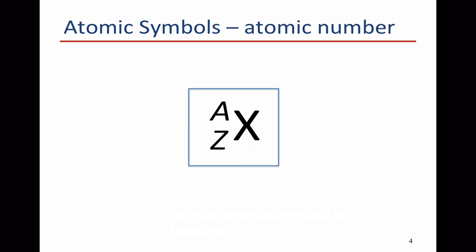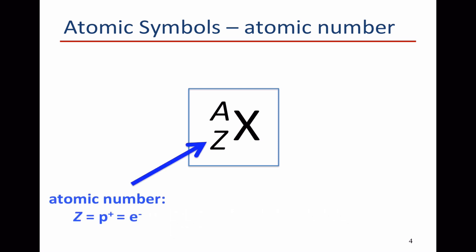The next bit of information is the atomic number. This is written as a subscript to the left of the atomic symbol. It's equal to the number of protons that the atom has, and in a neutral atom it's also equal to the number of electrons.